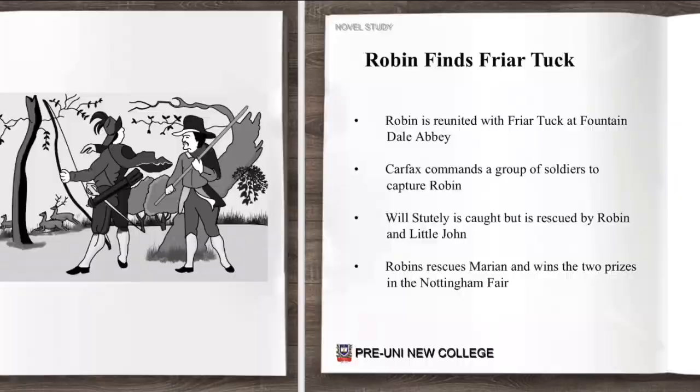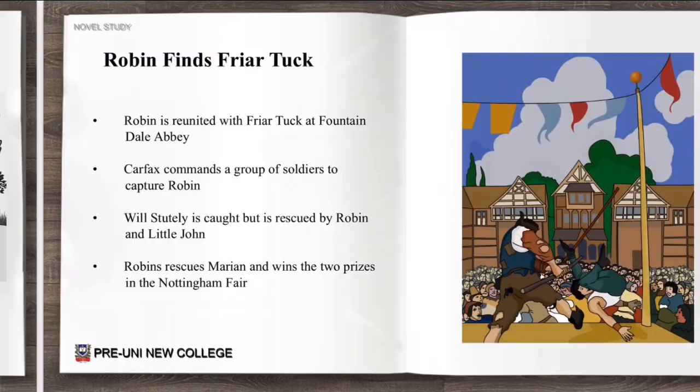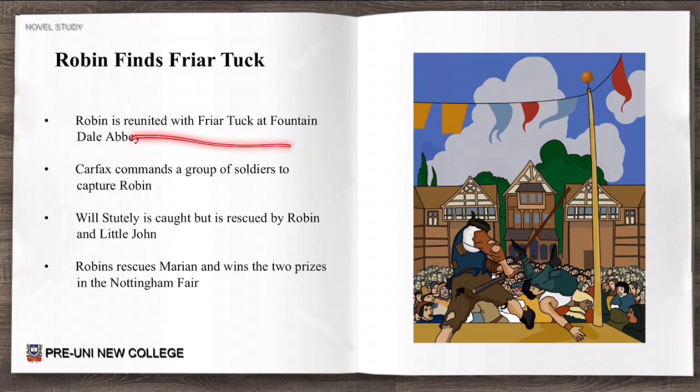In Robin finds Friar Tuck: Robin is reunited with Friar Tuck at the Fountain Dale Abbey. Carfax then commands a group of soldiers to capture Robin, because he has an arrest warrant from the sheriff. Will Stootly is caught, but he is rescued by Robin and Little John. Robin then rescues Marion and wins two prizes at the Nottingham Fair.